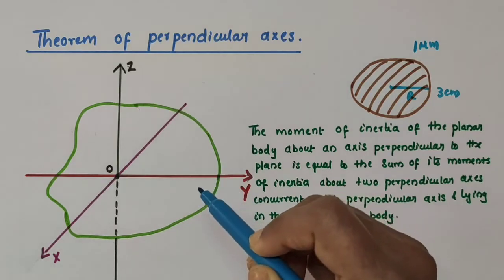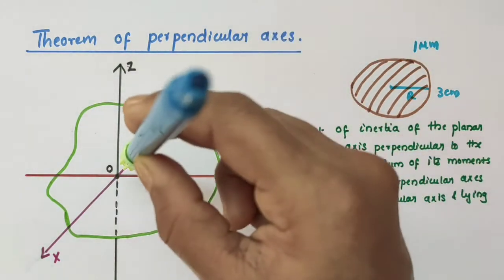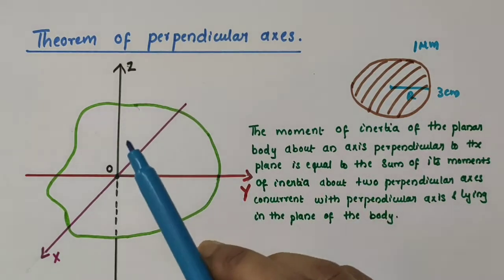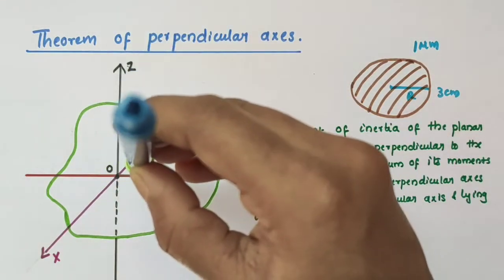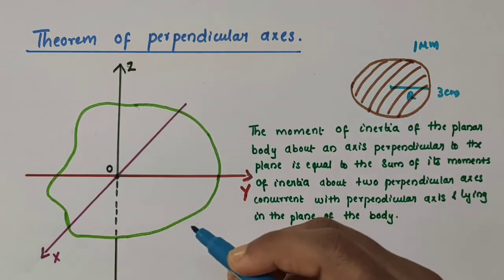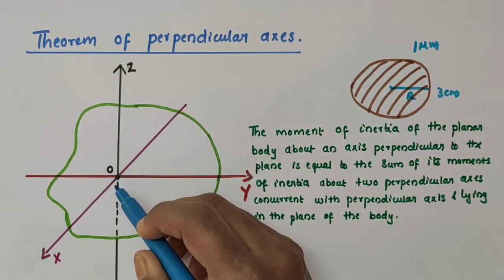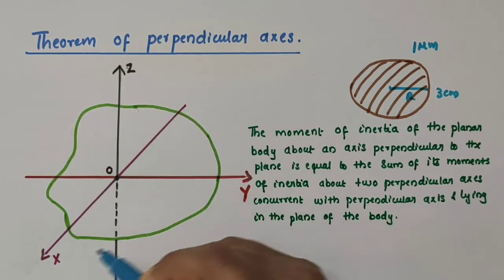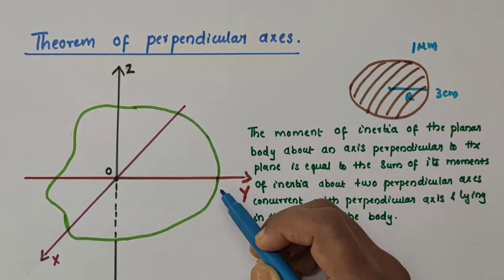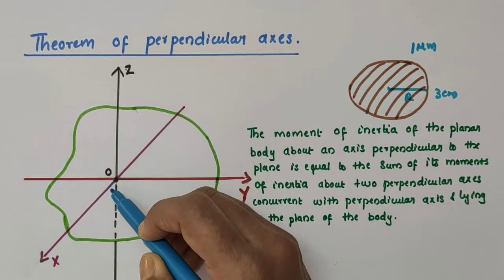For example, if the X and Y axes are lying in the plane of this paper, then the Z axis is perpendicular to it. X and Y are two perpendicular axes lying in the plane of the body, and the Z axis is perpendicular to the plane. Here the Z axis passes through a point O, and the two mutually perpendicular axes X and Y are also concurrent with the Z axis — that is, all three axes are perpendicular to each other and pass through point O.